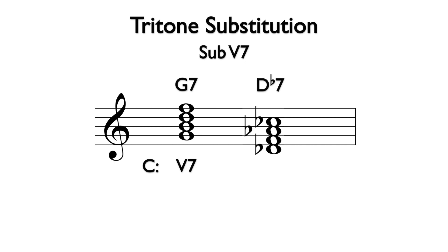In jazz compositions, enharmonic spellings are common, so the same chord could be written as C-sharp 7.